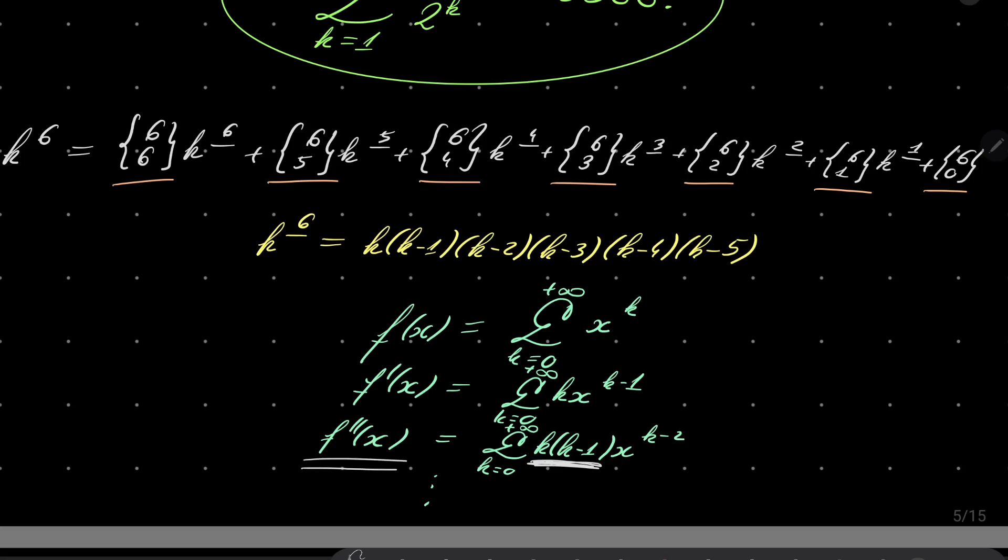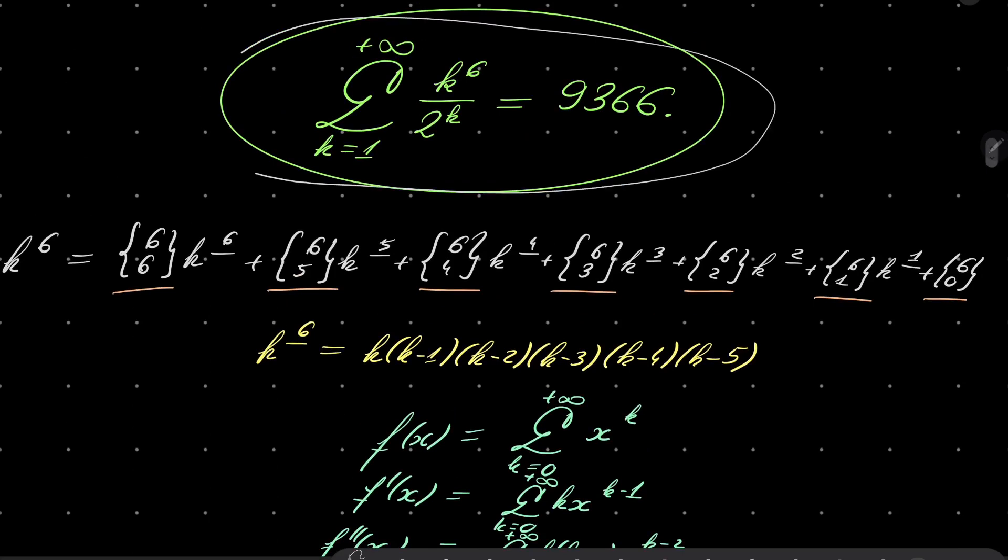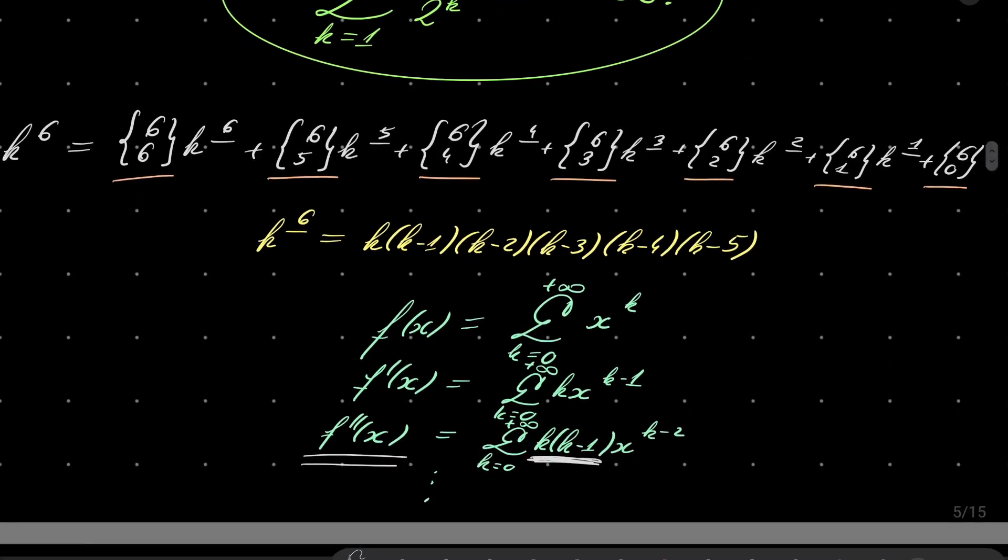And these derivatives of our function can be computed very easily, and then using this formula it can be combined all together to get an alternative proof of this result which I got here. So it's an advantage because well, computing derivatives is easier than computing theta operators, but on the other hand you have to compute these Stirling numbers or you have to look them up somewhere, so it's balancing together.